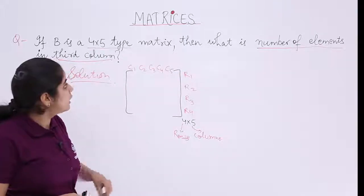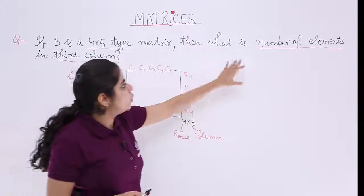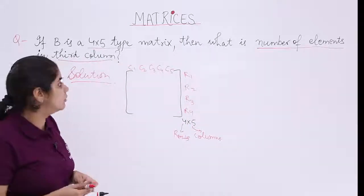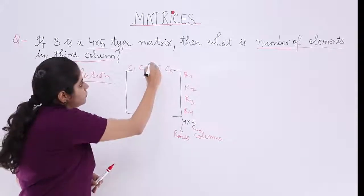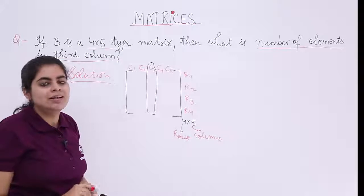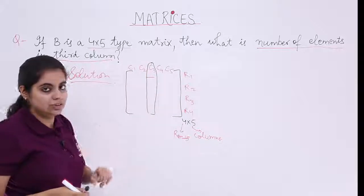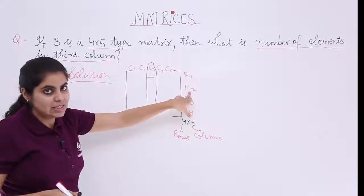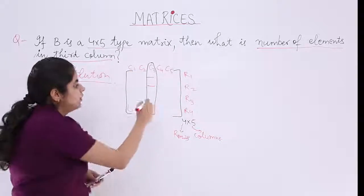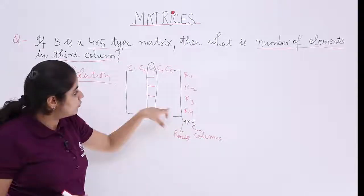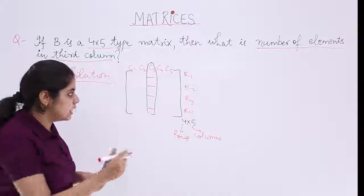Now what are we supposed to find out after we have done this 4 rows, 5 columns? We have to find out the number of elements in which column? In the third column. Where is the third column? So how many elements would be there? The elements, as you can see, one would be here at the intersection of R1 and C3. The other would be at the intersection of R2 and C3. The other would be at the intersection of R3 and C3 and the fourth and the last would be at the intersection of R4 and C3. So there are how many elements? There are 4 elements. So the answer is 4.